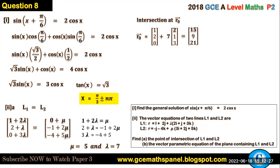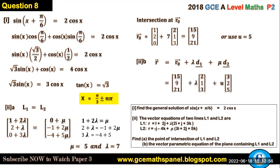Now (b), the vector parametric equation of the plane containing L1 and L2. The vector equation of the plane is given by r = r₀, that's the point of intersection, plus λd₁, where d₁ is the direction vector, plus μd₂, where d₂ is the direction vector of line two. This just gives us (15, 9, 21) + λ(2, 1, 3) + μ(3, 2, 5). It's the vector parametric equation of the plane containing L1 and L2.